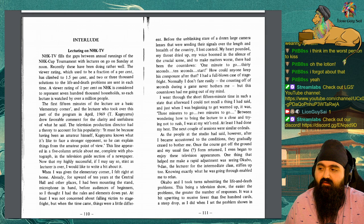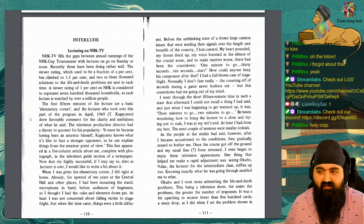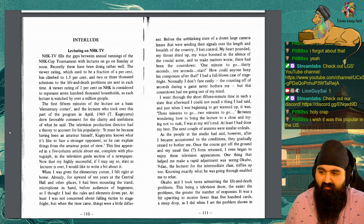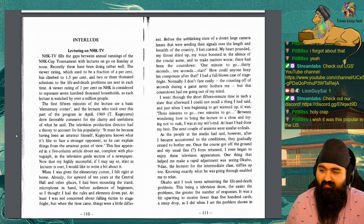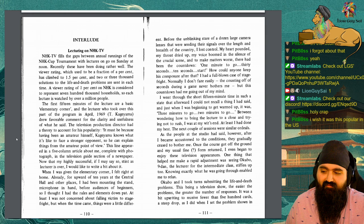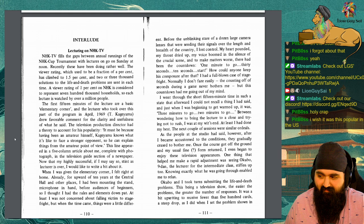The first 15 minutes of a lecture are a basic elementary corner, and the lecturer who took over this part of the program in April 1969, T. Kageyama, drew favorable comment for the clarity and usefulness of what he said. The television production director had a theory to account for his popularity. It must be because having been an actual amateur himself, Kageyama knows what it's like to face a stronger opponent, so he can explain things from the amateur point of view. This line appeared in a five column article about me, complete with a photograph, in the television guide section of a newspaper.